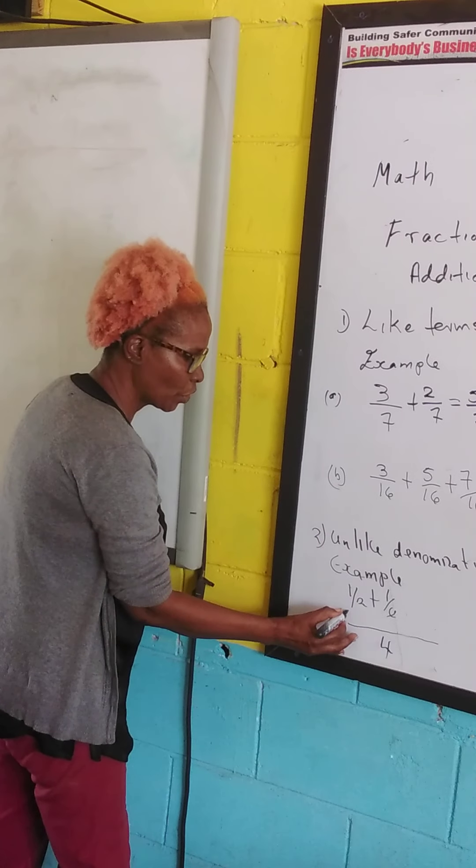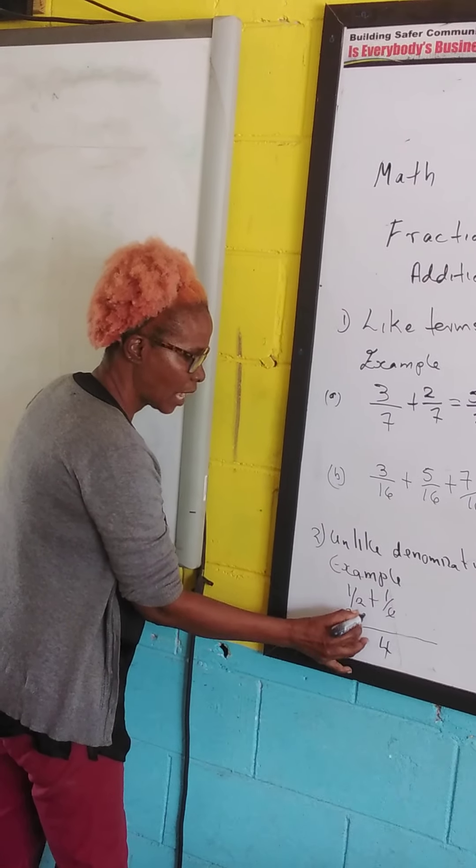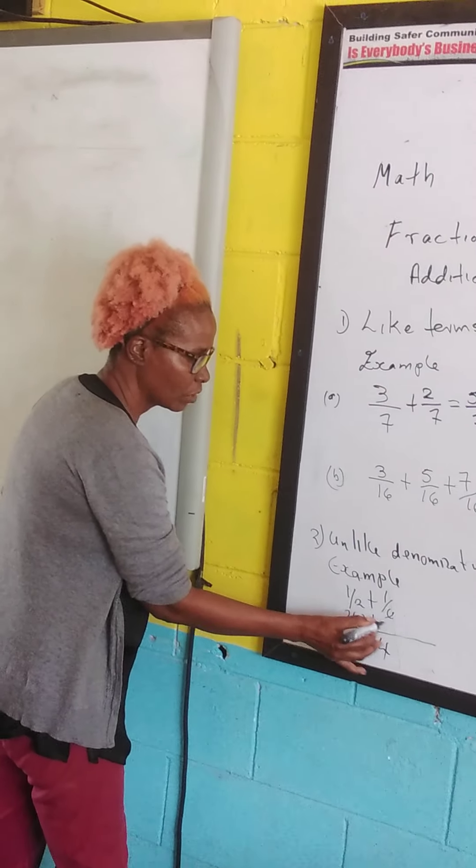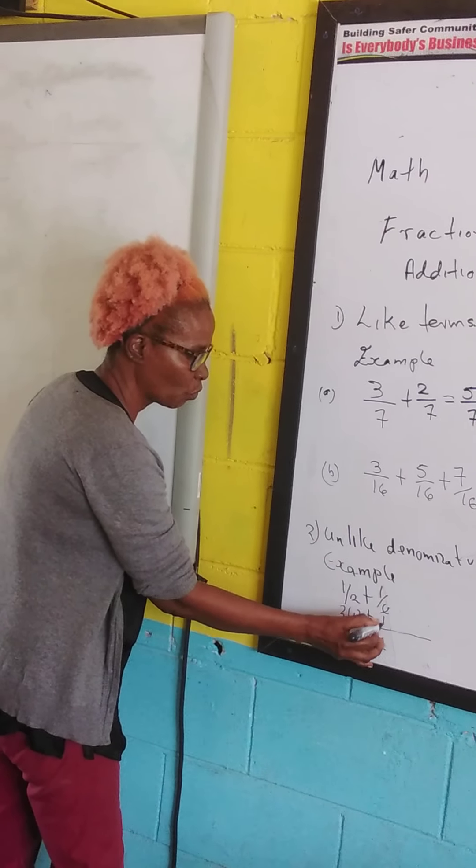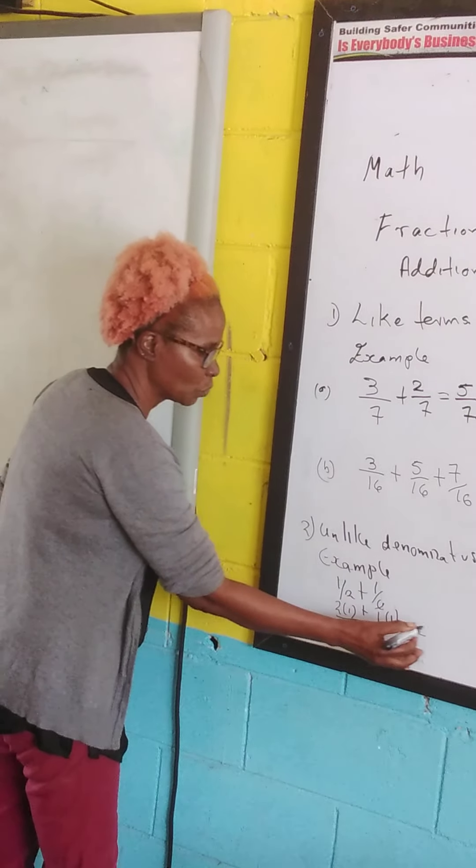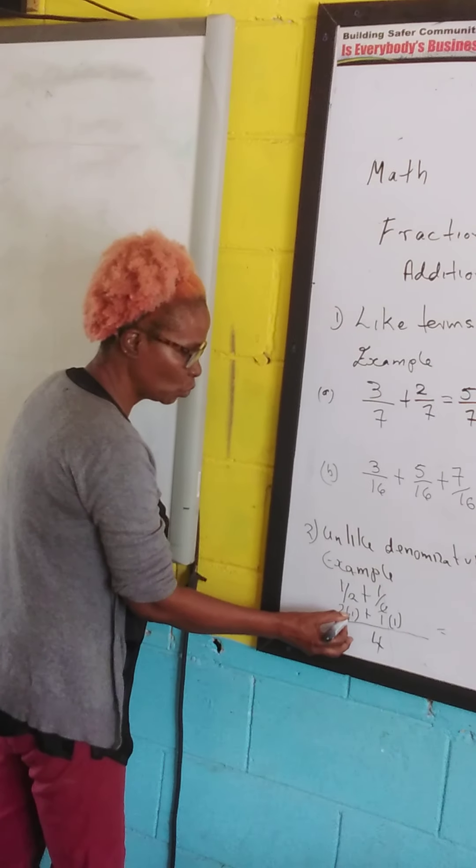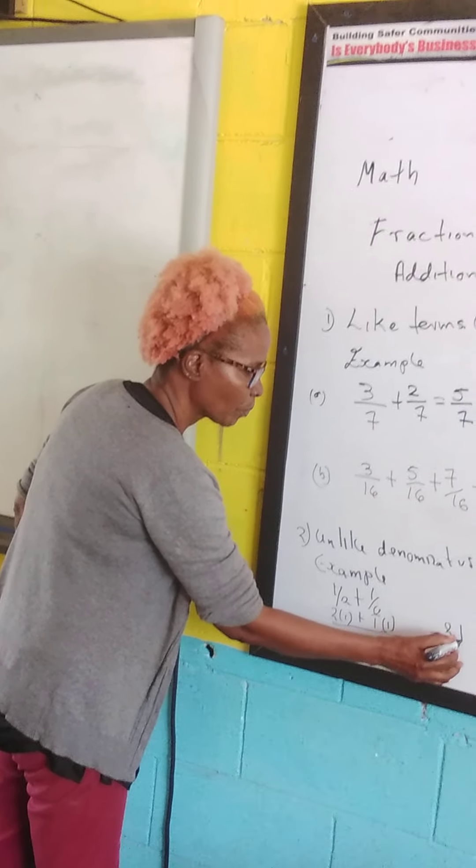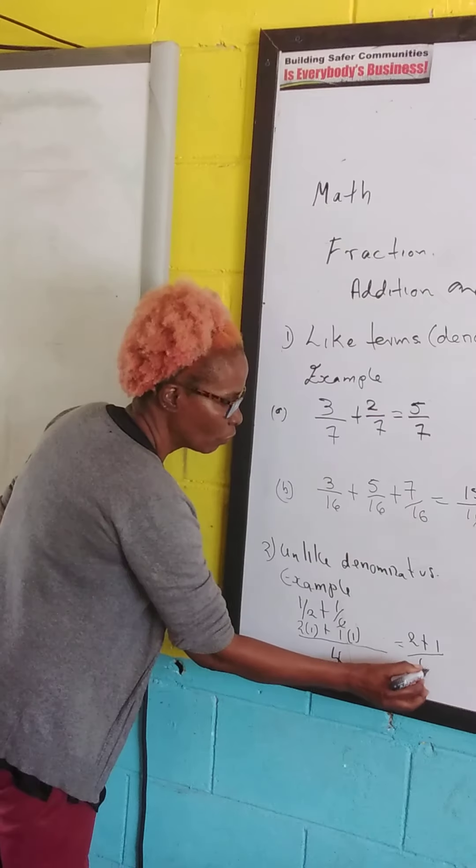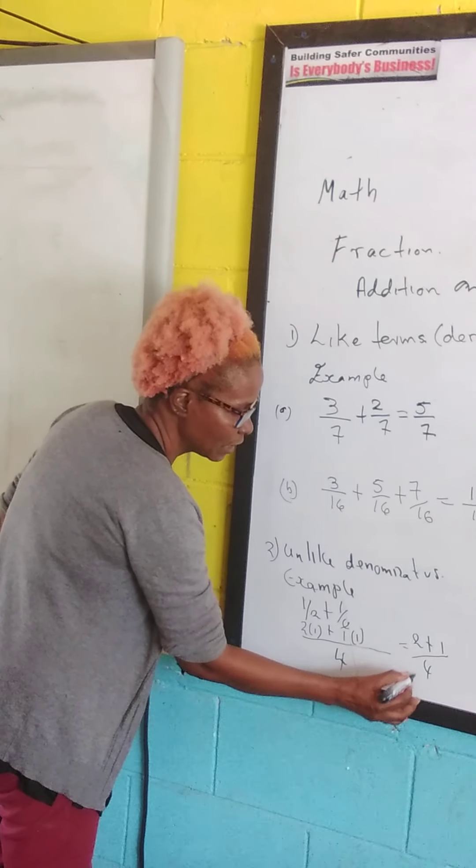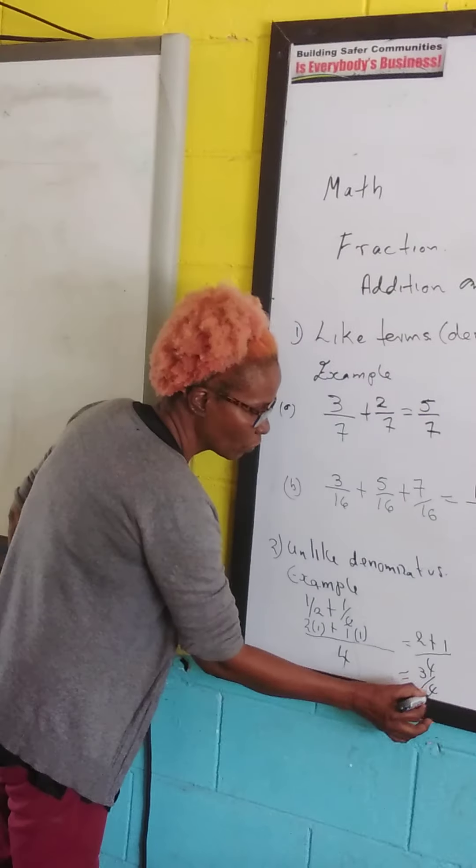So 2 into 4 is 2 times 1, 4 into 4, 1 times 1. So we end up 2 times 2 plus 1 plus 1 over 4 and this will give us 3 over 4.